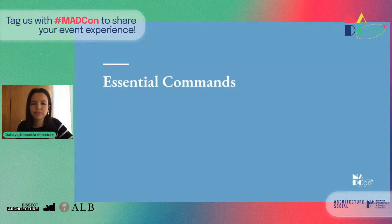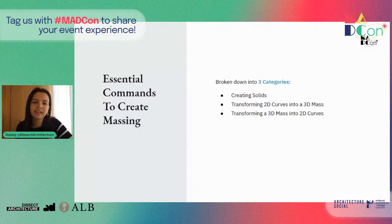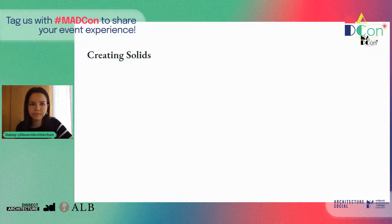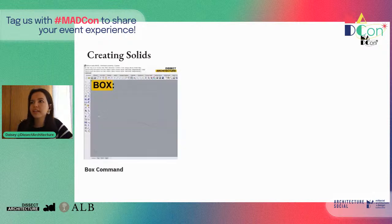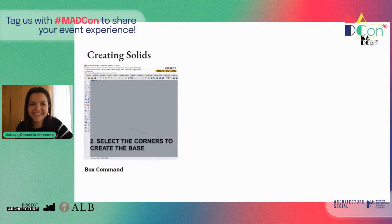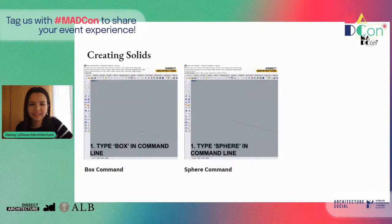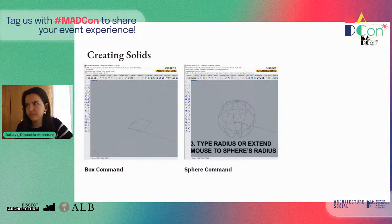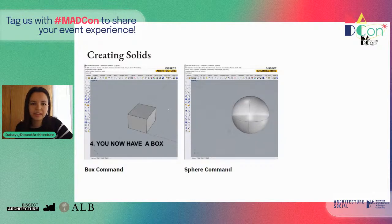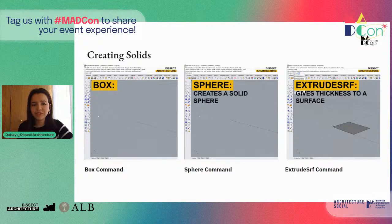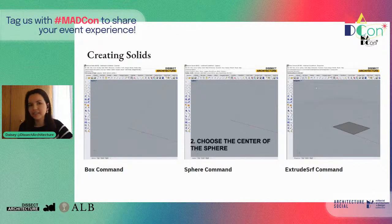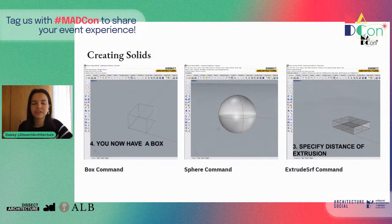Now we'll go over some of the most useful commands and how to apply them to quickly create a massing or extract curves, broken down into different categories: creating solids, transforming a 2D curve into a 3D massing, and transforming a 3D massing into a 2D curve. In the creating solids category, we first have the box command, which creates a solid box — handy to quickly sketch an idea or concept. Next is the sphere command, which creates a solid sphere, working similarly to the box command — you can choose the diameter or radius. Then we have the extrude surface command, which gives thickness to a surface, with various options like choosing the direction of extrusion, extruding to both sides, or making the extrusion a solid.